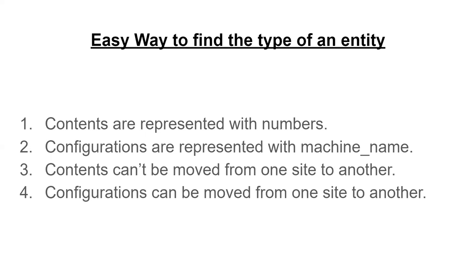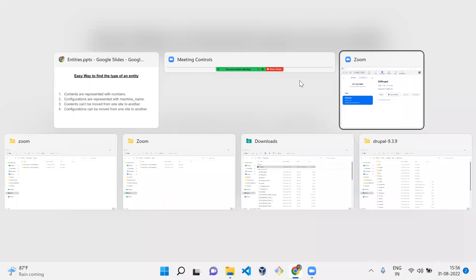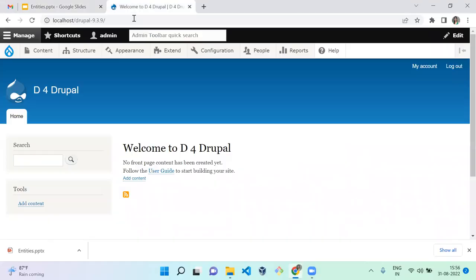How can we find whether something is a content entity or a configuration entity without digging into the code? Content entities are represented with numbers, while configuration entities are represented with a machine name.